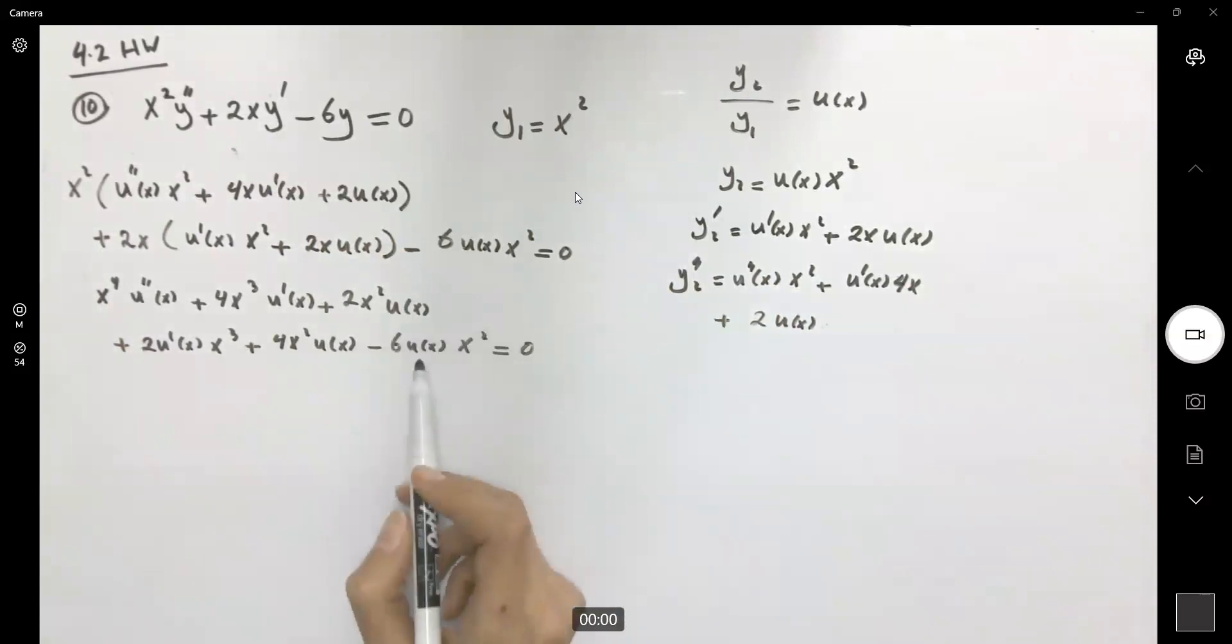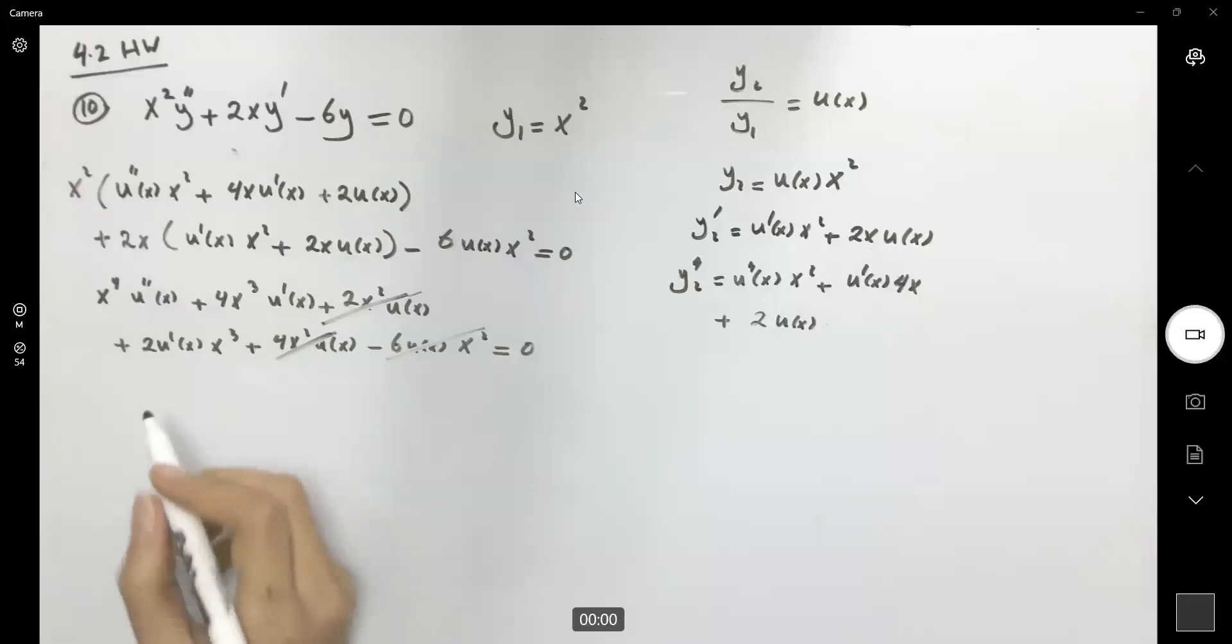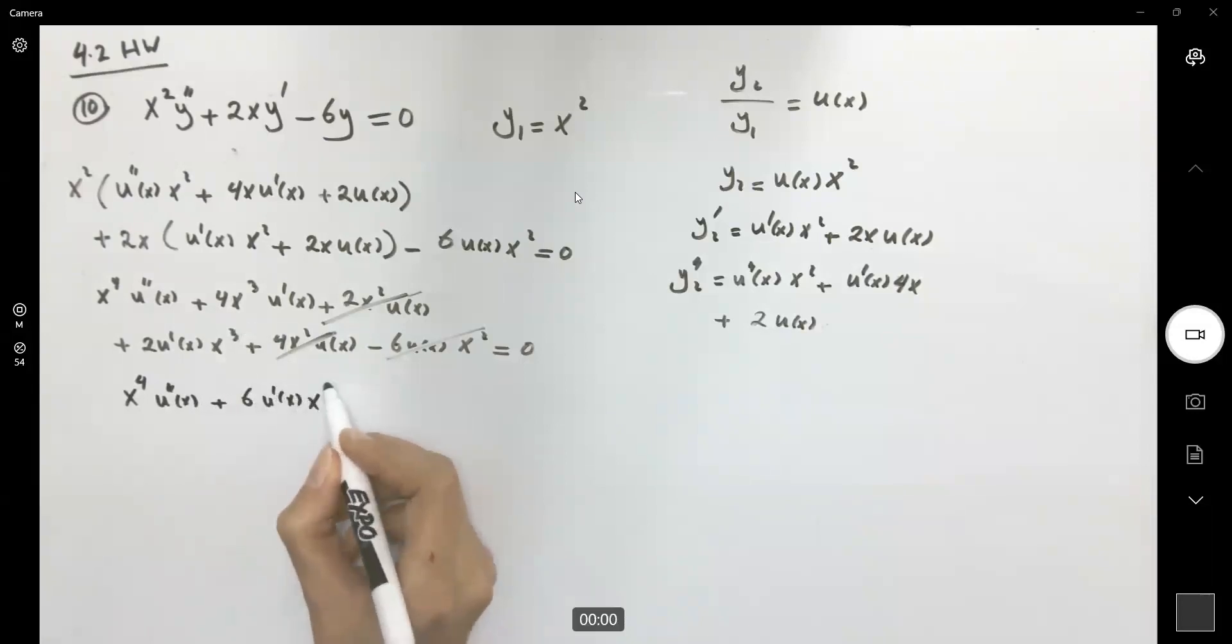So let's see, what do we have? u of x times x squared, we have 2x squared u of x, we have 4x squared u of x. So as you can see, you can cancel out these. So what's left? We're left with x to the fourth, the second derivative of u. Now let's see, here we can combine these two, plus 6u prime times x cubed equal to zero.